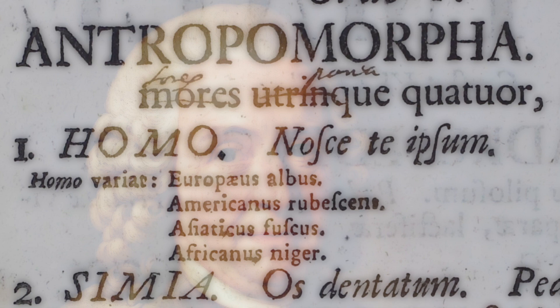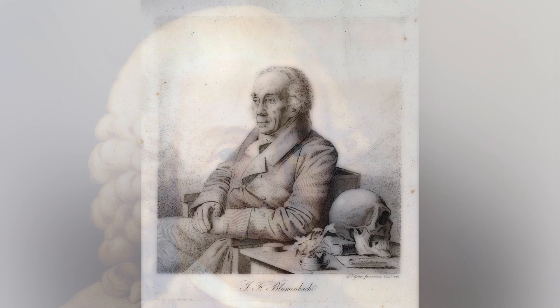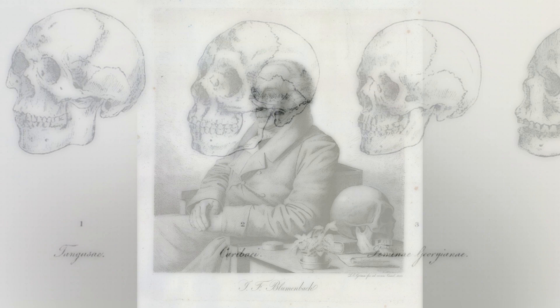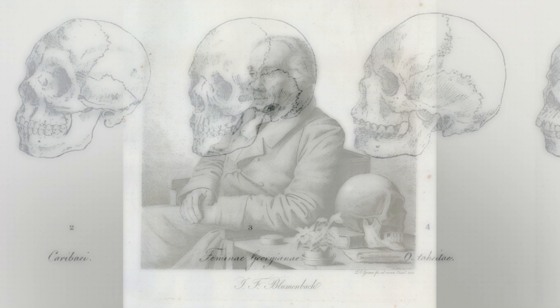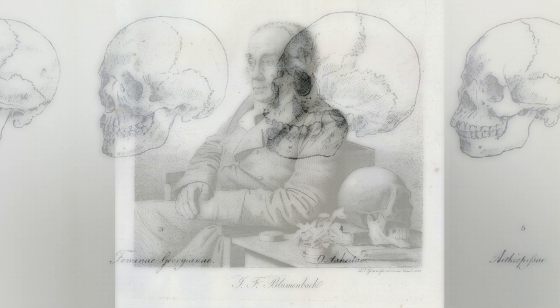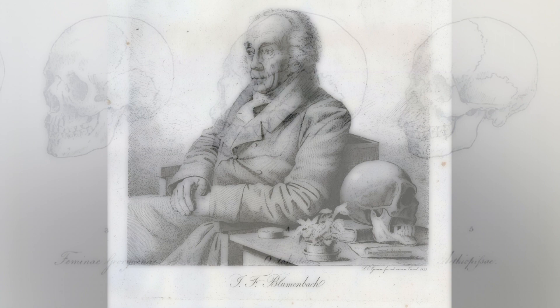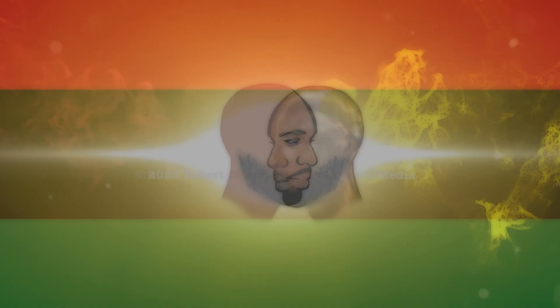Linnaeus did his work around 1758 and is the first deep root of racism we have discussed. Today we add the work of Johann Friedrich Blumenbach, who divided humankind into five races based upon his craniological research — the study of human skulls — around 1779. He is the second deep root of racism I'm putting on the table for further research and reflection. Carl Linnaeus and Johann Friedrich Blumenbach are two of the deep roots of racism, and their work is at the foundation of how we perceive race and experience racism in contemporary society.